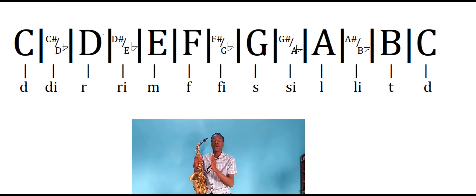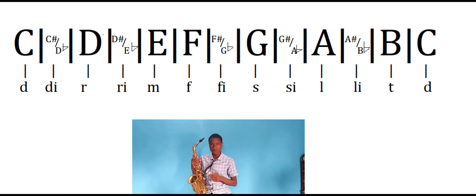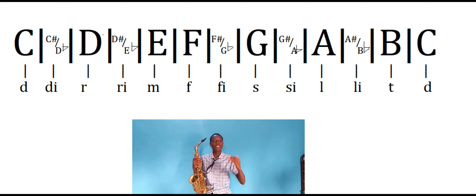Next one is your B, that's your TI — normal major scale TI. Last one is your C, which is your DO. And out of this, the chromatic scale gives C as DO.